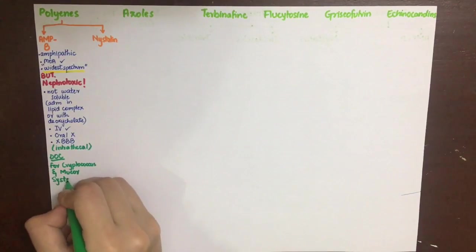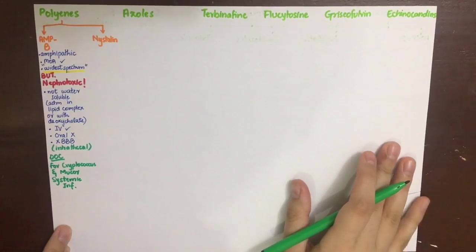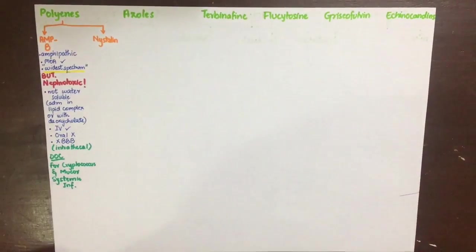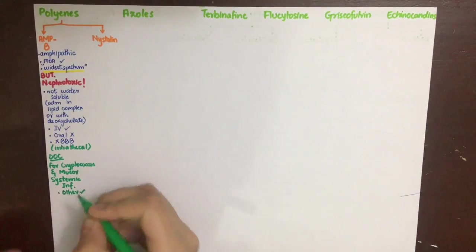The mode of resistance to amphotericin B can be by decreasing the quantity of ergosterol in the cell membrane of fungi, and thus it will not be affected by amphotericin B that much.